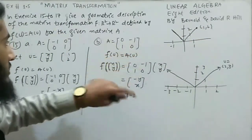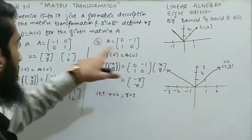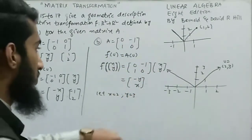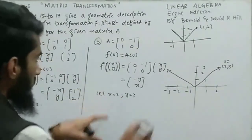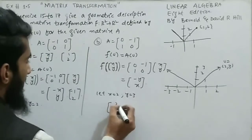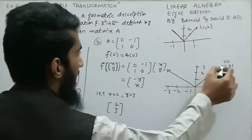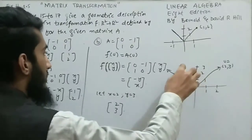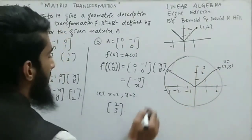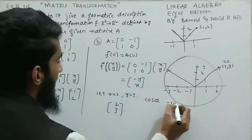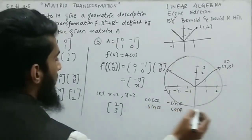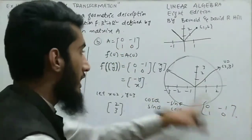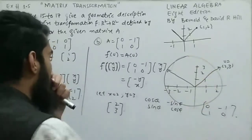For part B, A = [[0,-1],[1,0]]. So f(x,y) = [[0,-1],[1,0]]·(x,y), giving the image (-y, x). For example, x=2, y=3: original u = (2,3), image = (-3,2). This corresponds to a counterclockwise rotation by 90°. Using the rotation matrix with θ=90°: cos90°=0, -sin90°=-1, sin90°=1, cos90°=0, giving [[0,-1],[1,0]], confirming a 90° counterclockwise rotation.